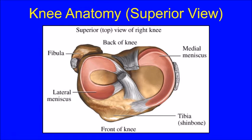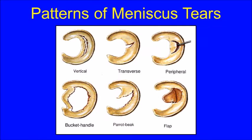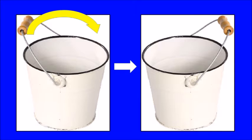Meniscus tears can occur in a variety of different patterns. A bucket-handle tear refers to a long, linear meniscal tear that results in an inner C-shaped flap of meniscal tissue that can flip either in or out, much like the handle of a bucket, as seen in this picture.